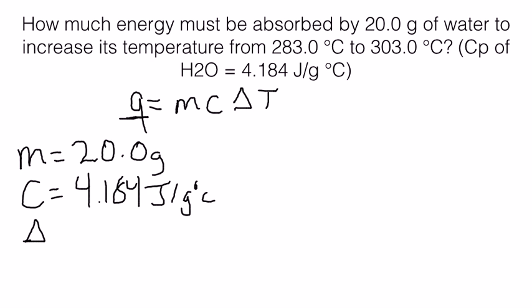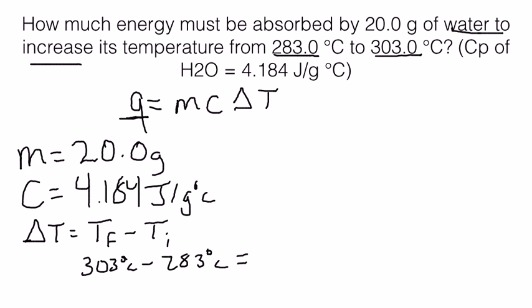And then our change in temperature is calculated as the final temperature minus the initial temperature. So our final temperature in this problem is 303 degrees Celsius and our initial is 283 degrees Celsius. When you subtract those, you get 20 degrees Celsius.